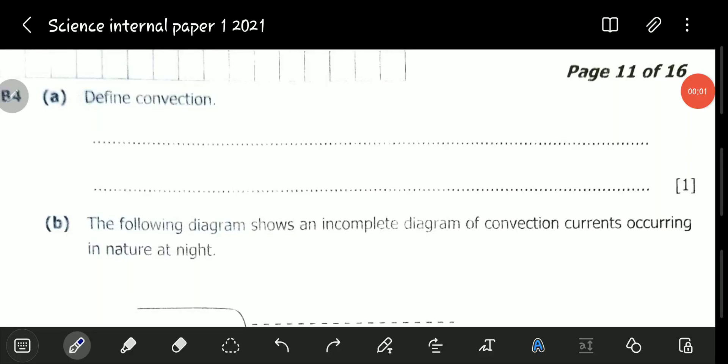Hello viewers, welcome to this exciting video. In this video, we will be looking at the November 2021 Science Paper 1, Question B4. Question B4 A reads, define convection.